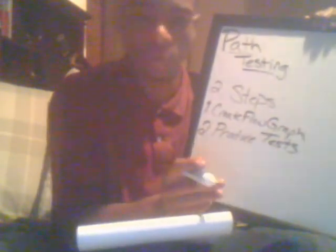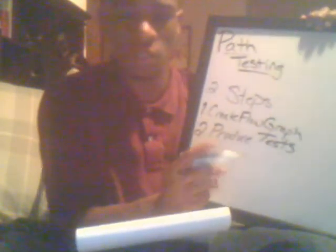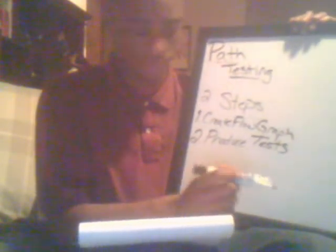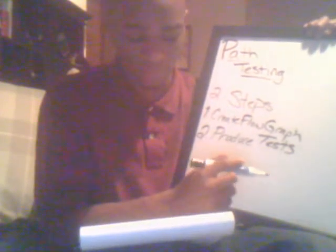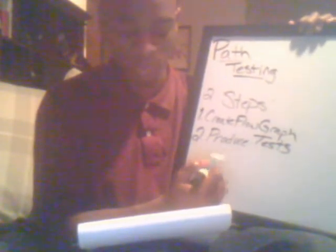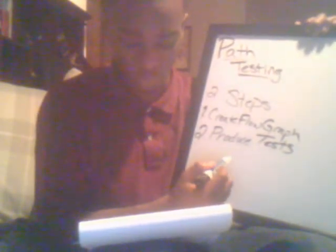Path testing is used to test each path of a program to ensure that it executes and works correctly. There are two steps to path testing: step one is to create a flow graph using pseudocode, and step two is to produce tests using the flow graphs and the pseudocode as references to produce the tests for the given program.